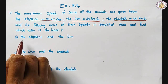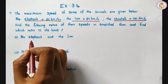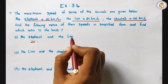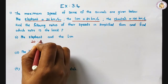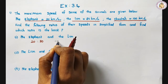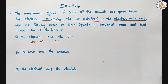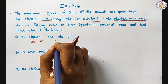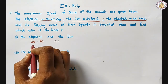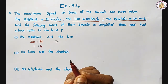First one: the elephant and the lion. What is the elephant speed? That is 20. Lion is 80. Both numbers are cancelled by 20. One 20 is 20, and four 20s are 80. So the ratio is 1 is to 4.